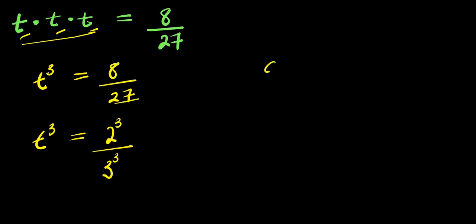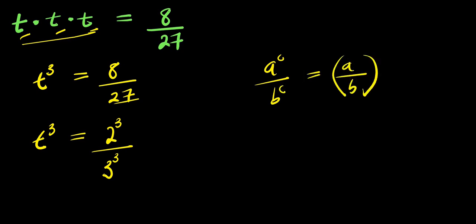So from here, if you have a power c divided by b power c, this equals a divided by b, to the power of c. So we apply this identity right here.